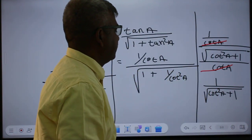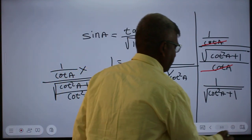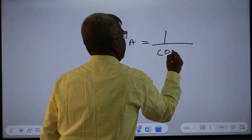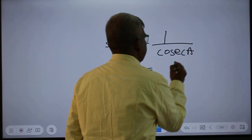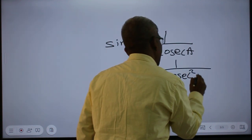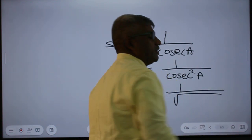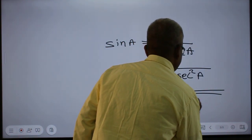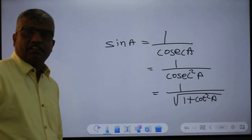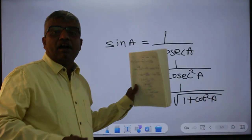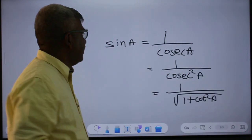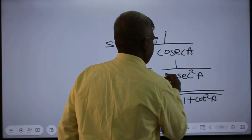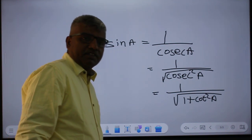That was a very elaborate way. There is a simpler method. Sin A equals 1 over cosecant A, and using the identity 1 plus cot squared A equals cosecant squared A, we get sin A equals 1 over the square root of 1 plus cot squared A.